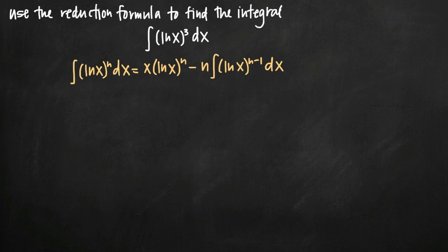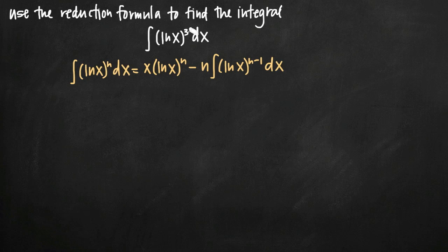Today we're going to talk about how to use a reduction formula to evaluate an integral. In this particular problem we've been given the integral of the natural log, or ln of x, raised to the third power. I've written the reduction formula here for reference. Basically, a reduction formula is a formula that tells you how to evaluate the integral. In this case, n is a constant, and we have ln of x raised to a constant of 3.